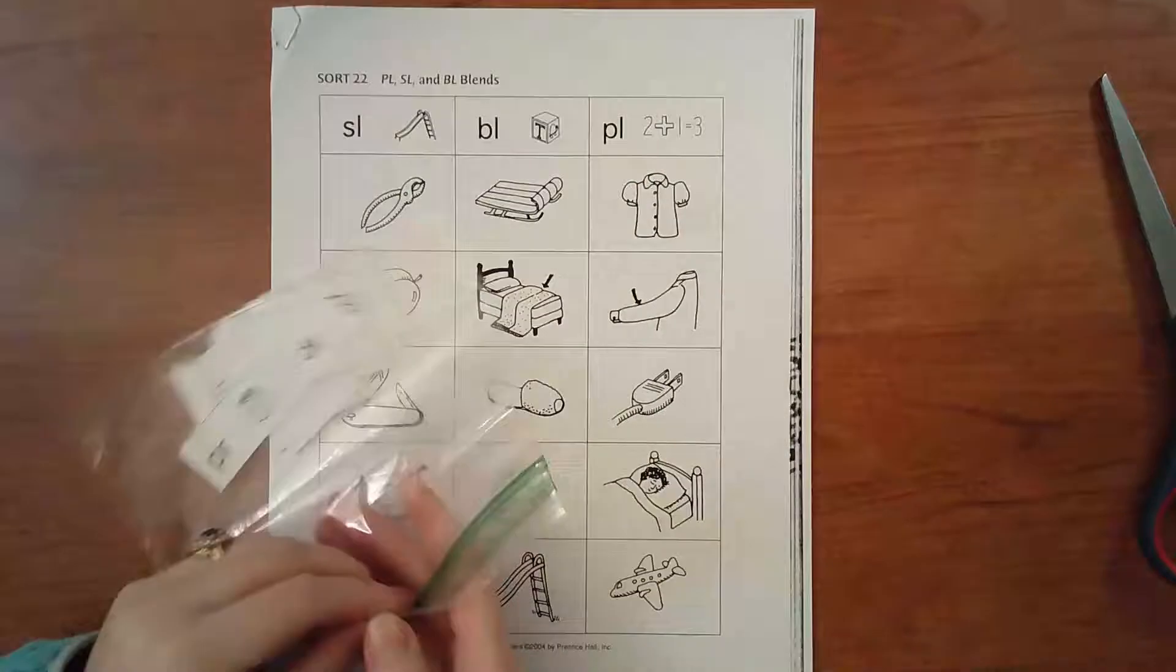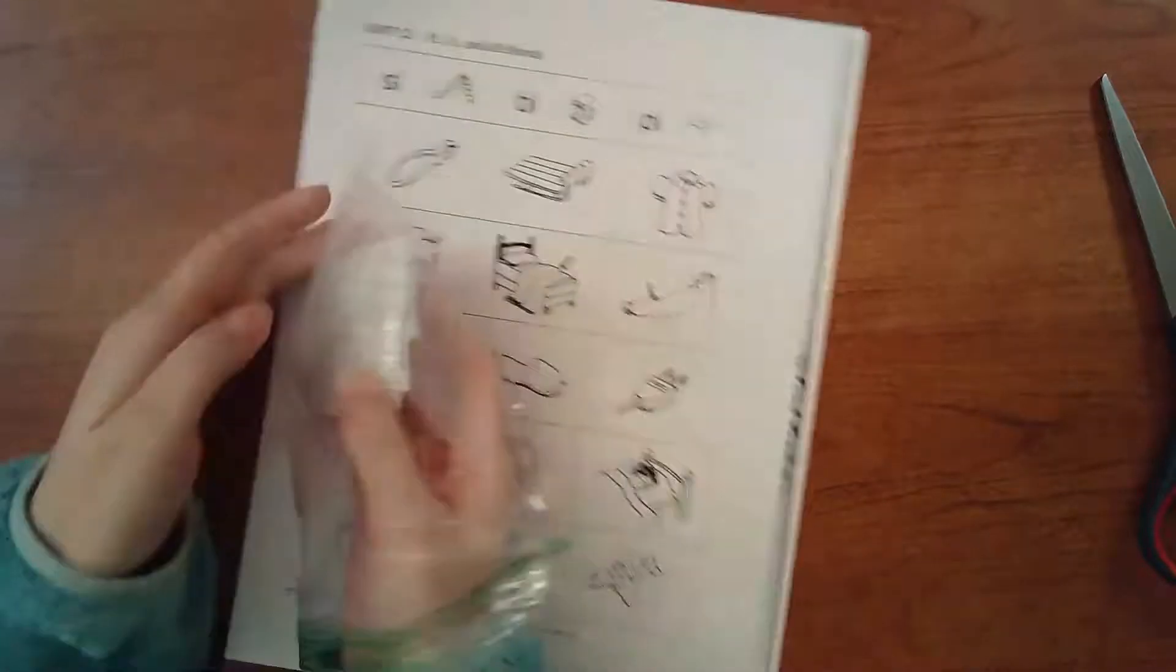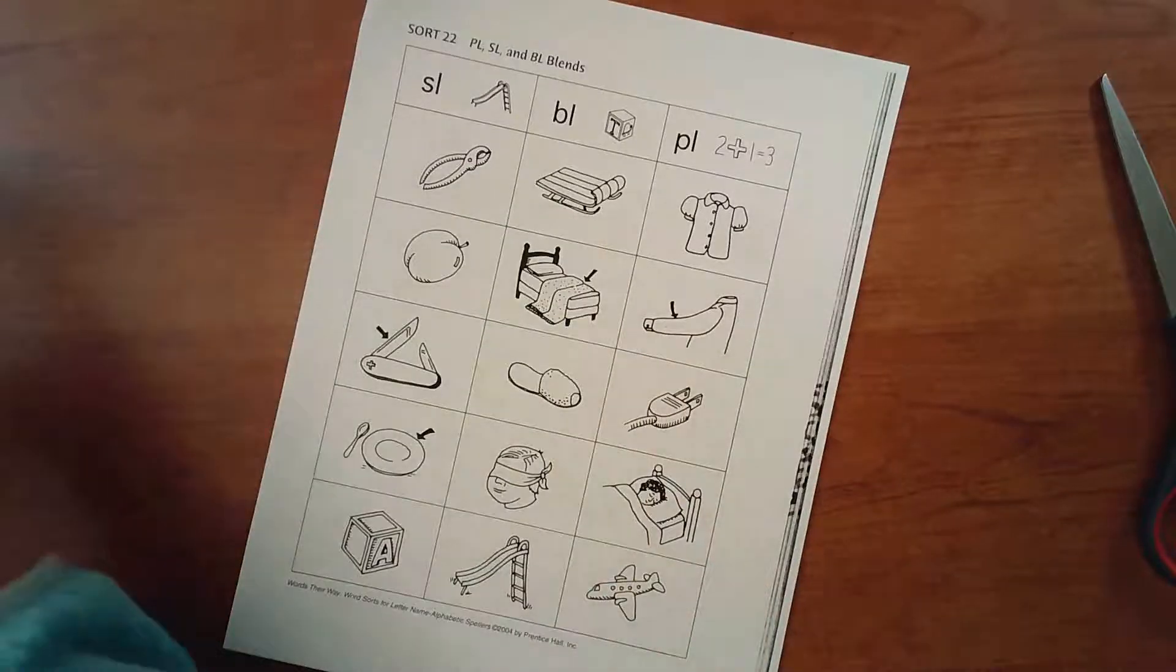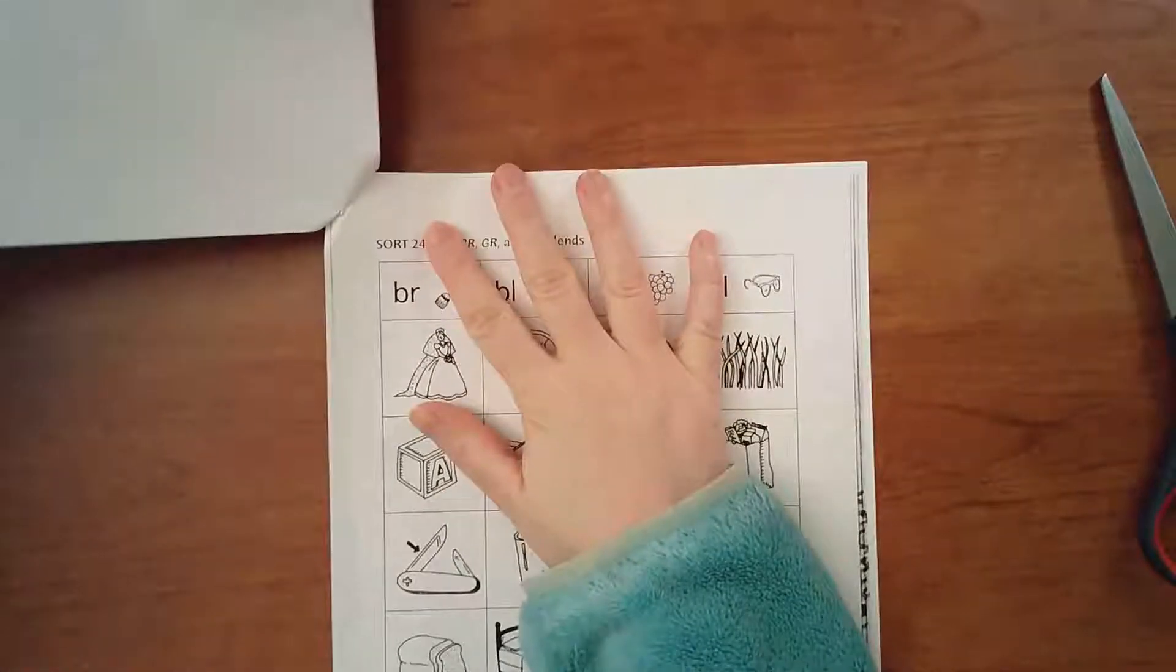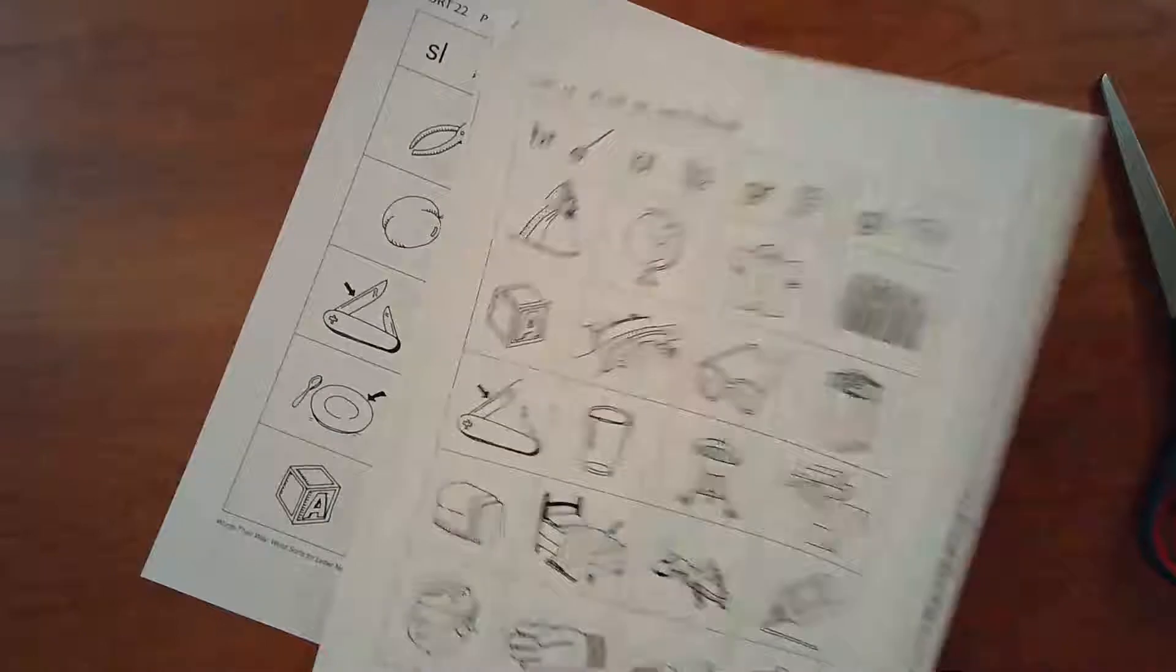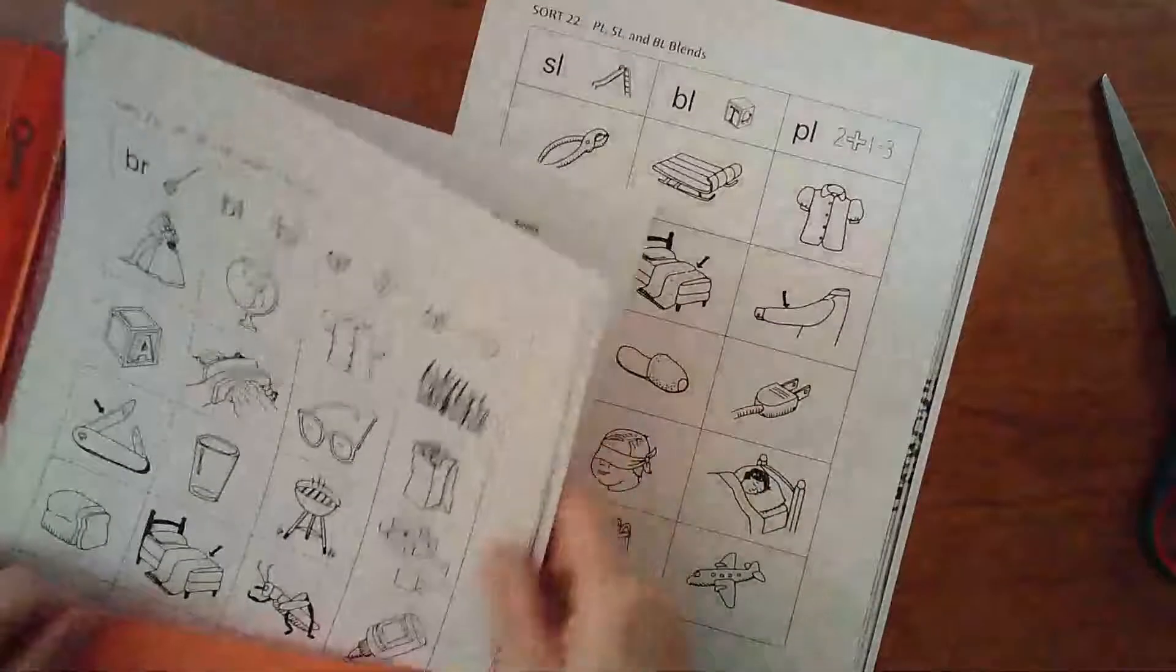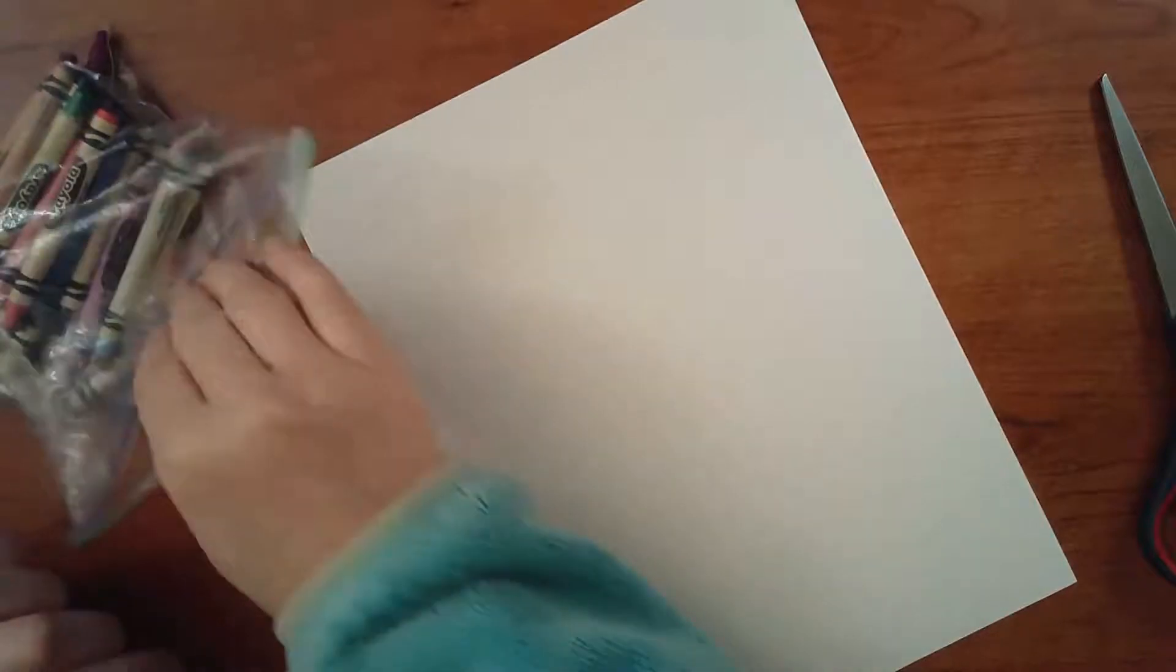Okay, so you're going to take out last week's sort of our R blends and you're going to put those in the recycling. And you're going to take off this top one, and then this packet, where does it go? You know it goes right back in your word work for next week. Great.